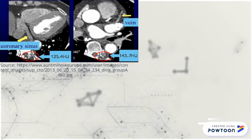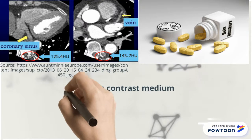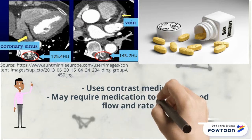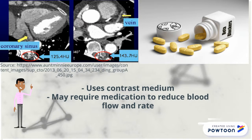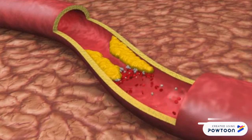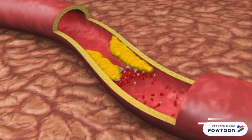CTCA uses contrast medium injected into the veins, usually in the arm, to increase the density of the blood in the vessels and allow the structure of the vessels to be imaged clearly. Sometimes, medication to reduce blood flow and heart rate is also administered to further improve clarity of images. CT coronary angiography is very effective in diagnosing and monitoring narrowing of arteries and blockages.